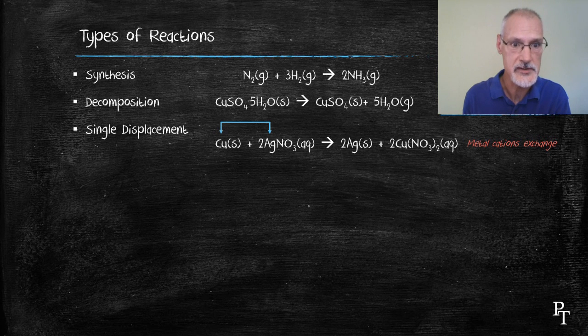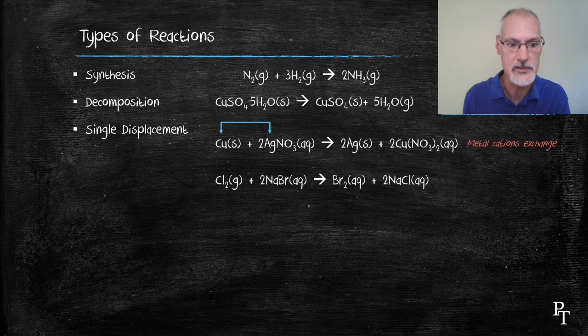But we can also exchange other parts of the equation. For instance, the non-metal portions can also be exchanged, as they are done in this equation. Chlorine and bromine essentially switching positions.